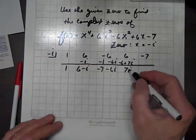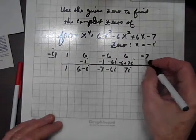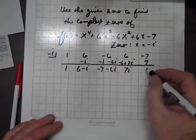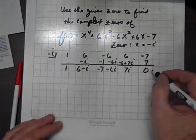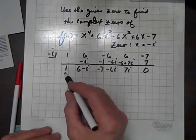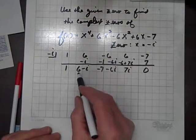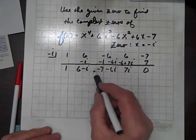Negative i times 7i is negative 7i squared, but i squared is negative 1, so a negative times a negative is a positive, and there's our zero in the remainder position. Here we have the coefficients on the resulting quotient.